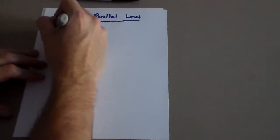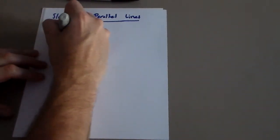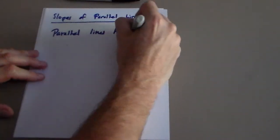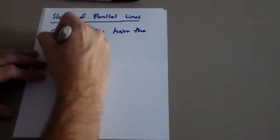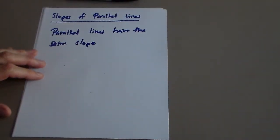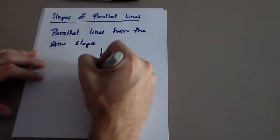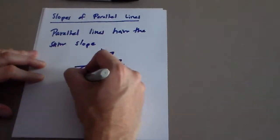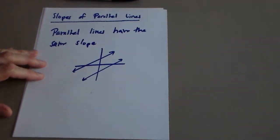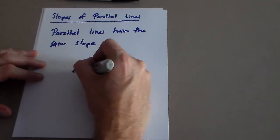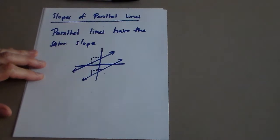Slopes of parallel lines — here's what you have to know: parallel lines have the same slope. That kind of makes sense. If you have a line like this and a line like this that are parallel, they have the same slope — a different starting point, but the amount they go up and over would be the same.